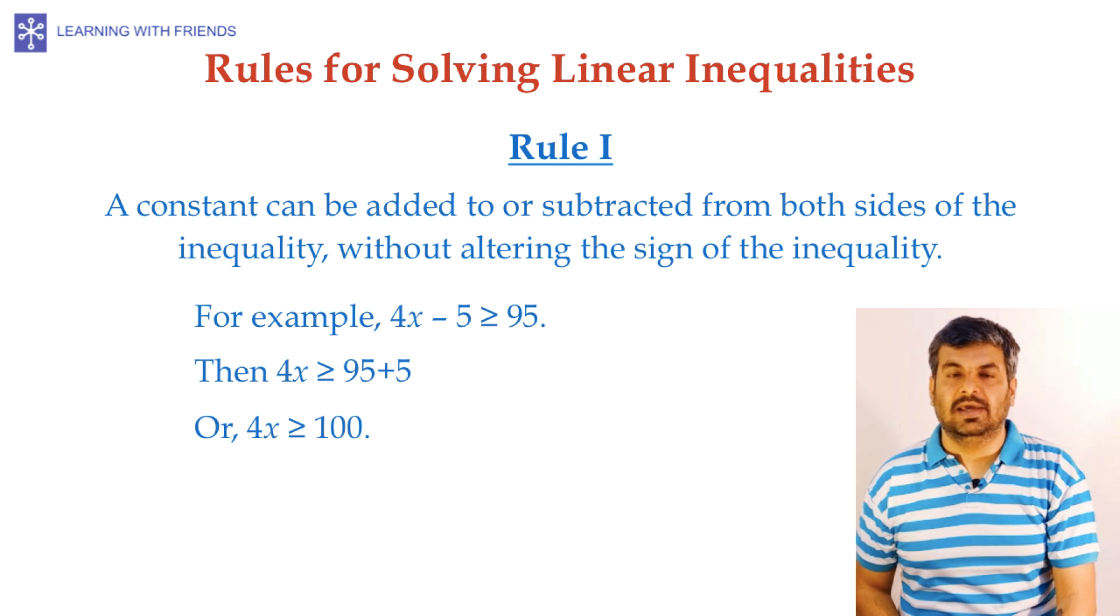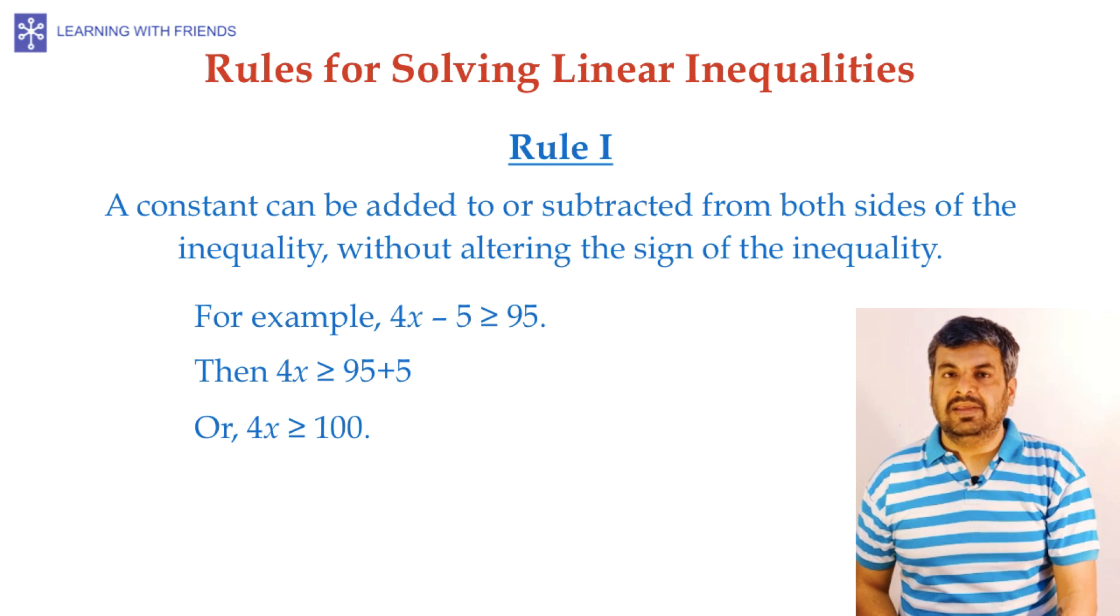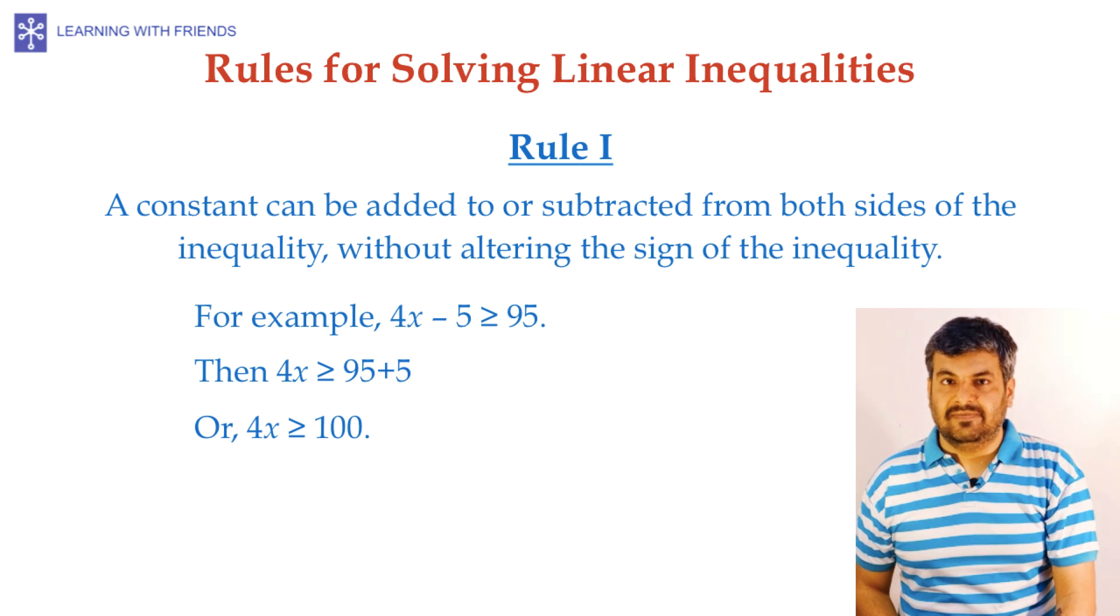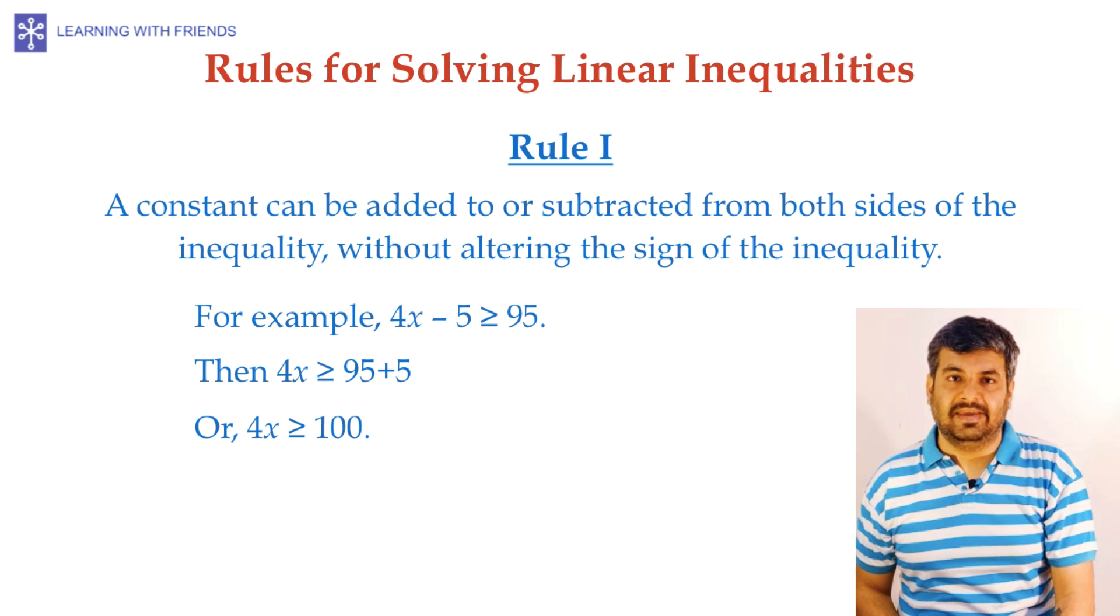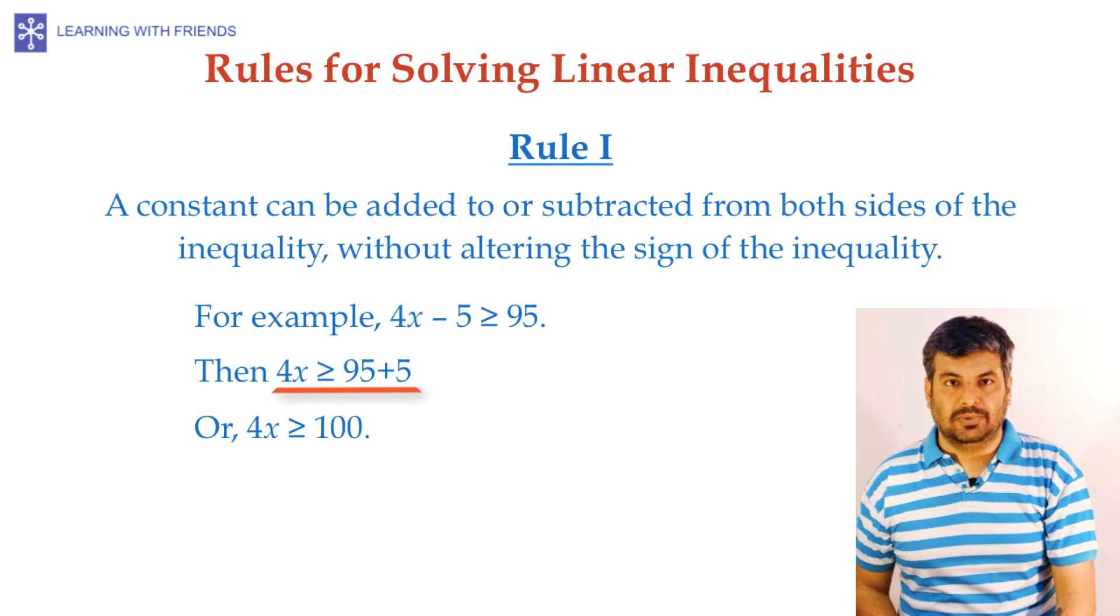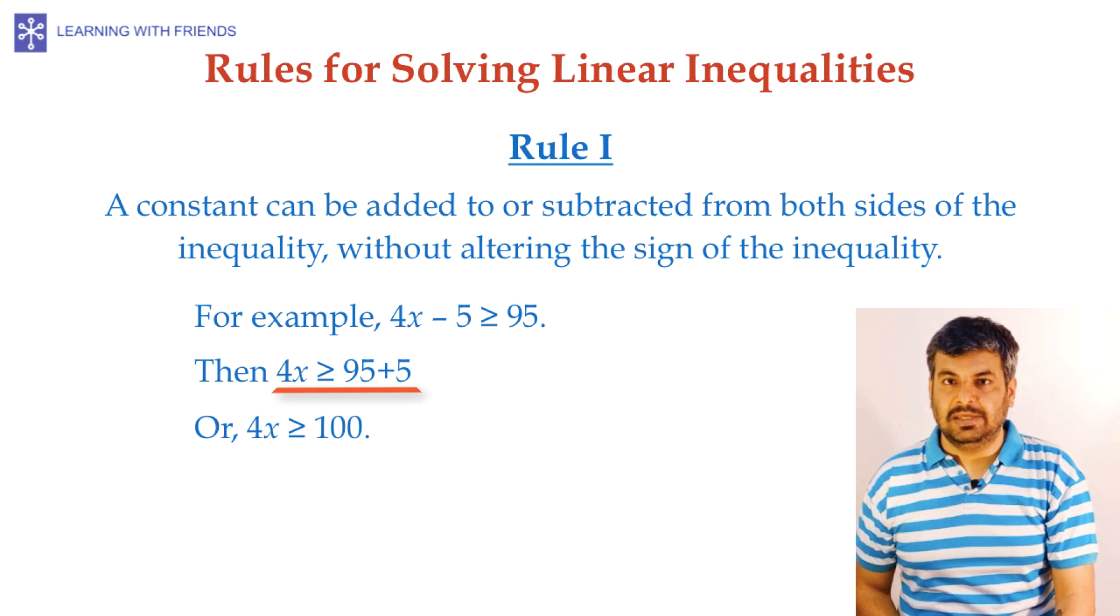To help us understand, consider the inequality, 4x minus 5 is greater than or equal to 95. Solving an inequality means isolating the variable x. To do that, we would have to add plus 5 to both sides of the inequality. And we would get 4x is greater than or equal to 95 plus 5 or 4x is greater than or equal to 100.